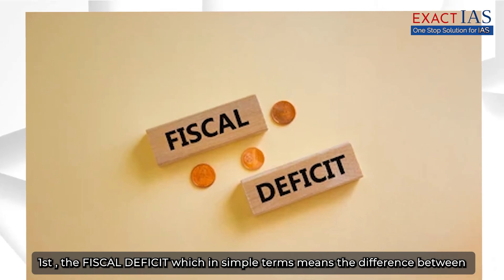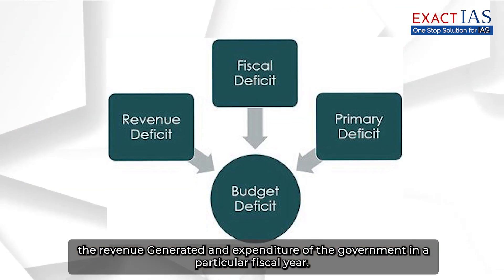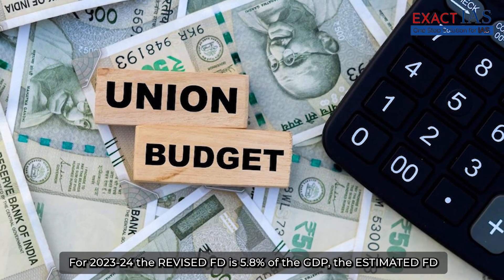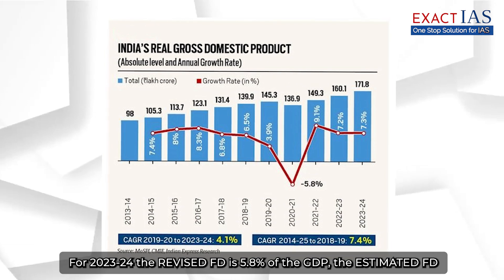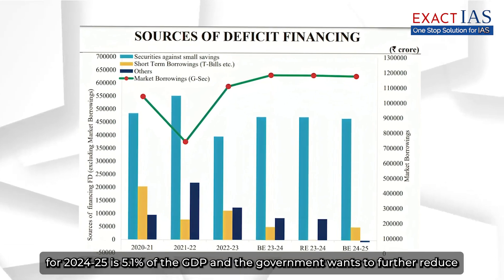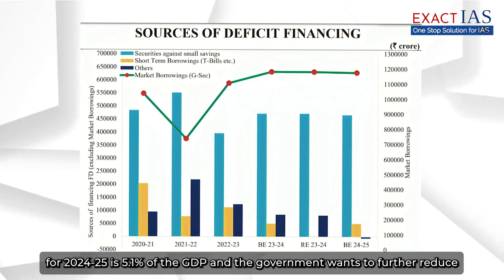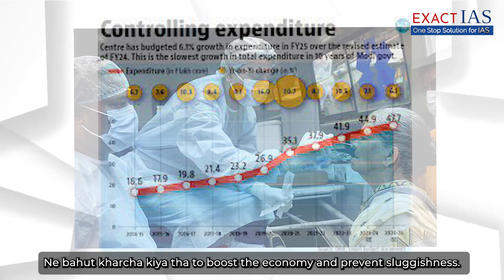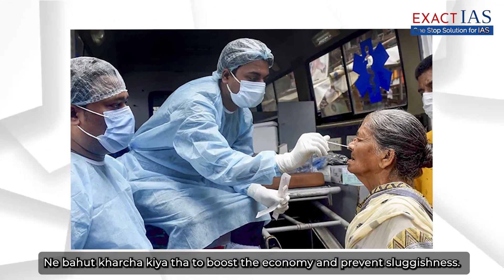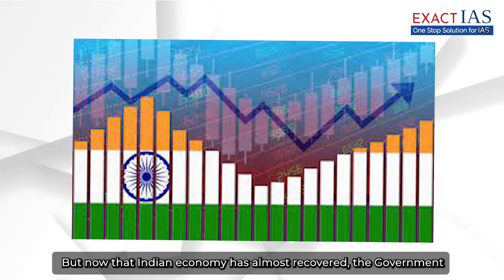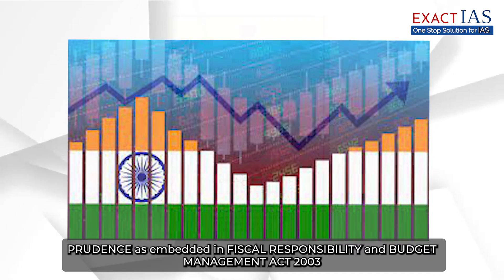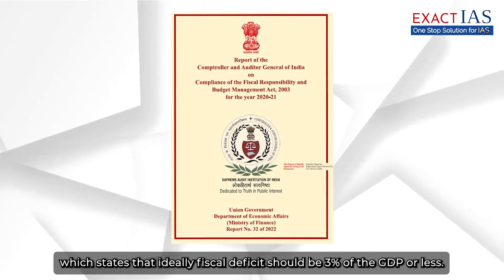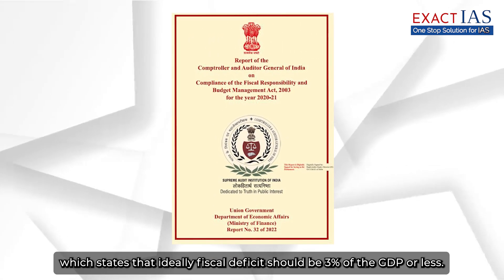First, the fiscal deficit — which in simple terms means the difference between the revenue generated and expenditure of the government in a particular fiscal year. For 2023-24, the revised fiscal deficit is 5.8% of GDP. The estimated fiscal deficit for 2024-25 is 5.1% of GDP, and the government wants to further reduce it to 4.5% by 2025-26. In COVID-19, the central government had increased spending to boost the economy. But now that the Indian economy has almost recovered, the government wants to tread on the path of fiscal consolidation, as embedded in the Fiscal Responsibility and Budget Management Act 2003, which states that ideally fiscal deficit should be 3% of GDP or less.